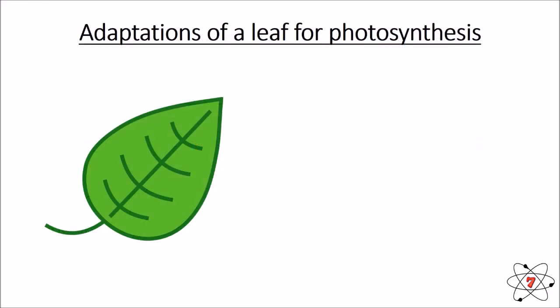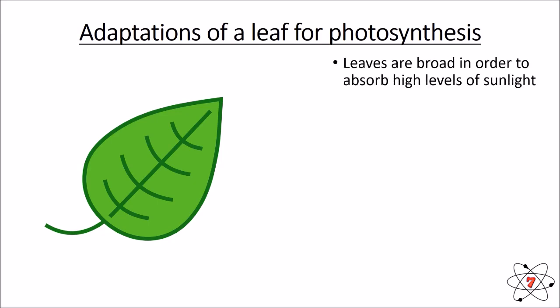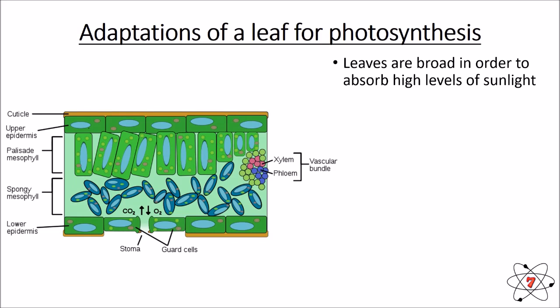Leaves have many adaptations that allow them to complete photosynthesis. One of the most obvious is that leaves are broad, so they can absorb a large amount of sunlight. Looking at a cross-section, the layers are: cuticle, upper epidermis, palisade mesophyll, spongy mesophyll, and lower epidermis. We also have stomata — holes on the underside — and a vascular bundle containing xylem and phloem. The movement of substances around the plant is called translocation.